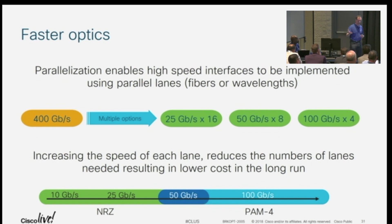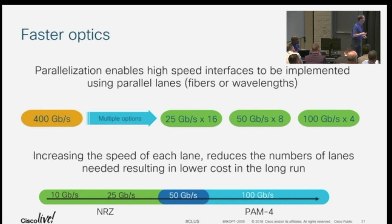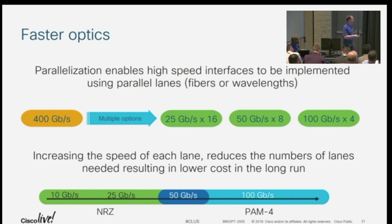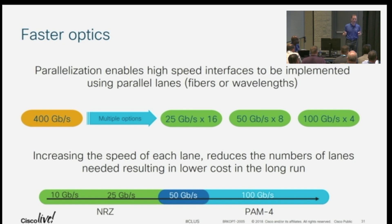So we talked about going faster, and I want to talk about the concept of lanes and parallelization. Just using 400 gig as an example, there are many ways to do this. You can build it up as 16 lanes of 25 gig all the way up to four lanes of 100 gig, and any and all of those combinations can probably be bought or are being worked on right now.